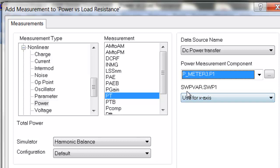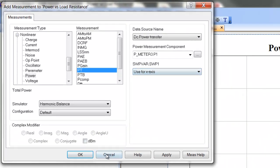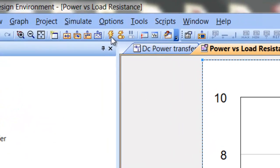And you can see here, it's asking you what you want to do with the swept variable. In our case, we will use it as an x-axis. Because what we want to see is the total power across the range of values that we set up for the load resistance. So we just click on apply, and OK. And now we simulate.